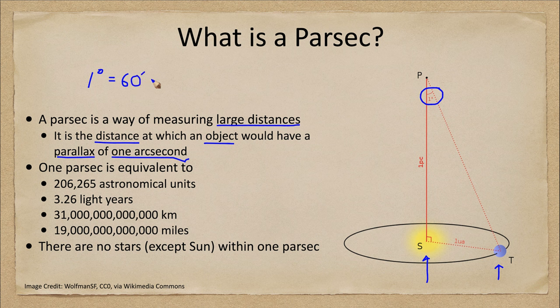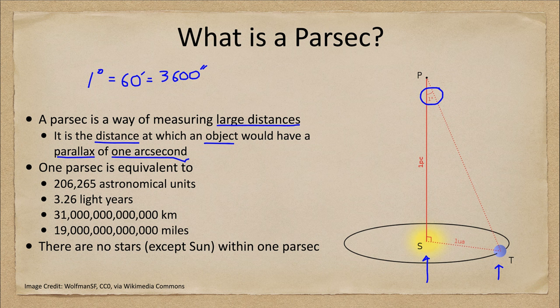Now, one degree is equal to 60 arc minutes, written with the single-quote symbol, or 3600 arc seconds. So one arc second would be one 3600th of a degree. Our moon would be about half a degree, so one arc second is almost one two-thousandth the diameter of the full moon — an extremely small angle, but one we may need to measure to determine distances out into space.